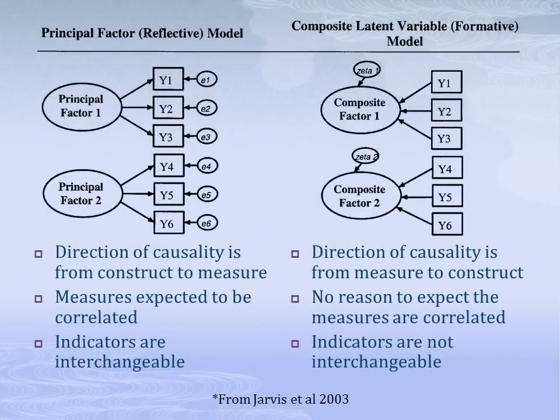That about does it for the different types of variables. The next concept we'd like to discuss is the nature of variables and how observed variables relate to each other and to their latent constructs. In these models we have the latent construct on the left, represented by an oval — also called the latent variable, the unobserved variable, or the factor. The rectangular variables have many names including items, indicators, measures, or observed variables. Each of these measures corresponds with a specific question or data collection item. Lastly, the small ovals represent measurement error.